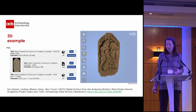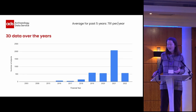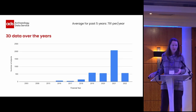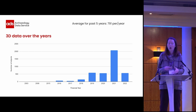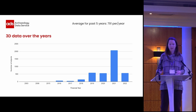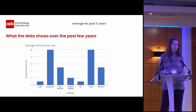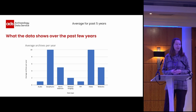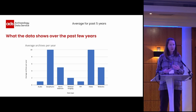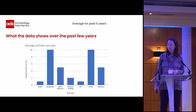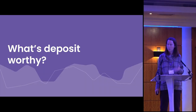3D data: we're also getting an increased amount, nearly 800 per year. That covers various components — photogrammetry, LiDAR, laser scanning, all of that. But you may have noticed there are a few things I didn't show you, and I've heard it mentioned a number of times: geophysics, which hasn't made its way into our digital archives, along with some other various data types as well.